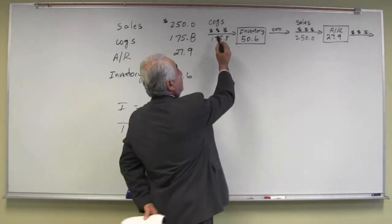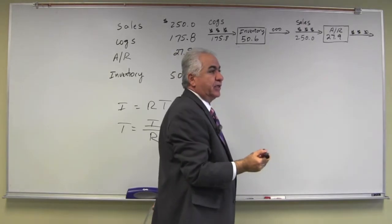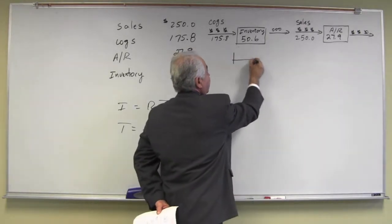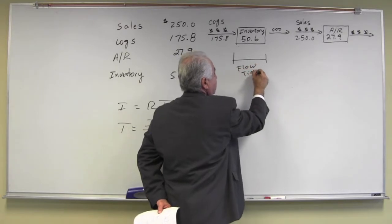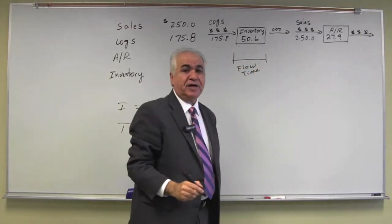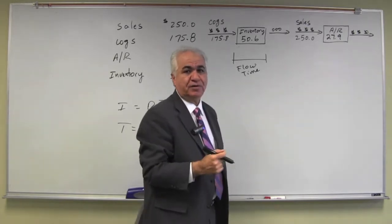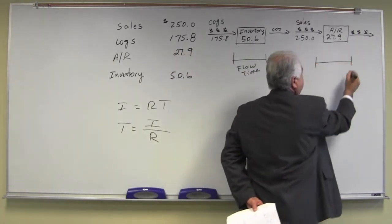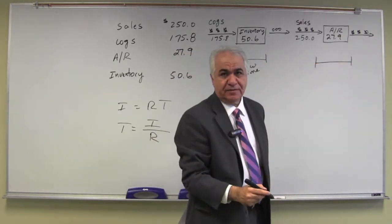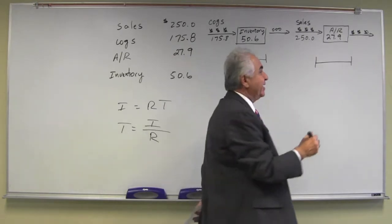If this is the cost of goods sold is the throughput of the process and this is the average inventory, then the flow time of the process is a reference to the factory time. How long does it take for that dollar to go through the process? Here the flow time becomes the account receivable time. How long does it take on average to collect on our account receivables?